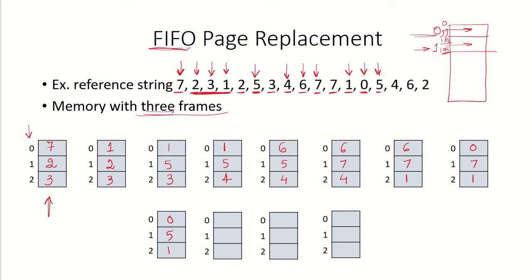There is a reference for page 4. Out of pages 0, 5, and 1, page 1 was brought in earliest, so page 1 will be replaced by page 4, causing a page fault. Memory becomes 0, 5, and 4. Page 6 is referenced again — another page fault. Out of pages 0, 5, and 4, page 0 was brought in earliest, so it is replaced by page 6, giving pages 6, 5, and 4. Then page 2 is referenced — another page fault. Page 5 was brought in earliest, so it is replaced by page 2.